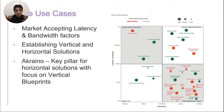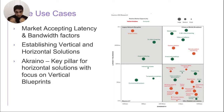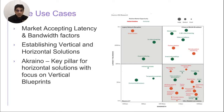Looking at the bandwidth-latency equation — on a two-by-two matrix, the x-axis is bandwidth and the y-axis is latency from low to high. Applications either require high bandwidth and low latency, or low bandwidth and low latency. Many of these use cases are real right now, either growing or sized by the bubble representation, based on 451 Research data.